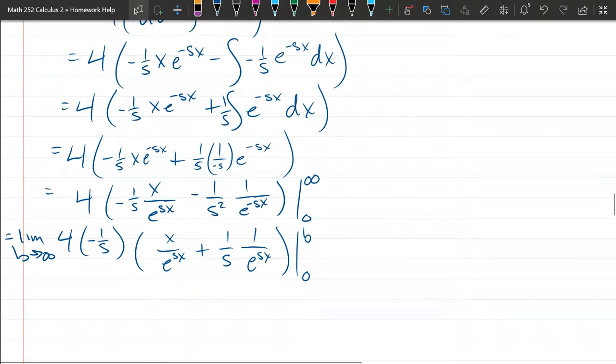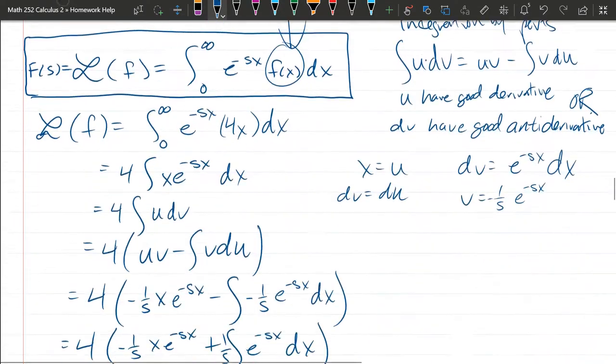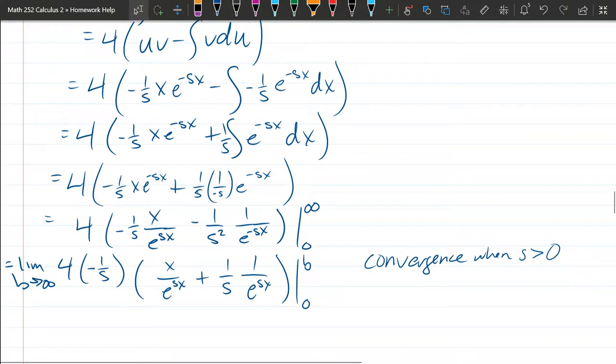When we take this limit you're going to get convergence when s is greater than 0. And if we scroll up, that was something I kind of didn't pay attention to at the beginning: the domain of this Laplace transform is a set of all real numbers s such that the improper integral converges. So the reason I need s to be greater than 0 is so that these go to 0 when we plug in infinity.